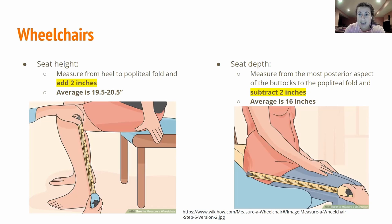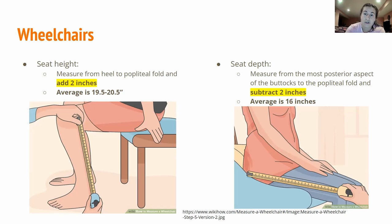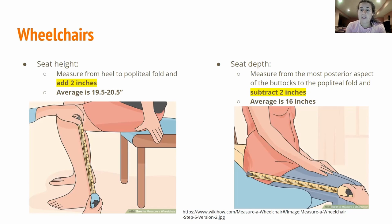For seat depth, you measure from the most posterior aspect of the buttocks to the popliteal fold, then subtract two inches. This prevents chafing on the distal thigh — if the seat goes all the way up into the back of the popliteal space it's very uncomfortable and puts a lot of pressure on the distal thighs. Subtracting two inches also gives the patient more mobility. The average seat depth is around 16 inches.